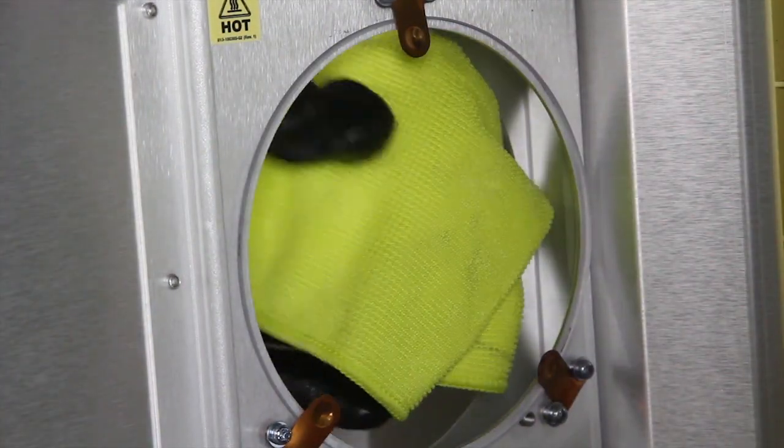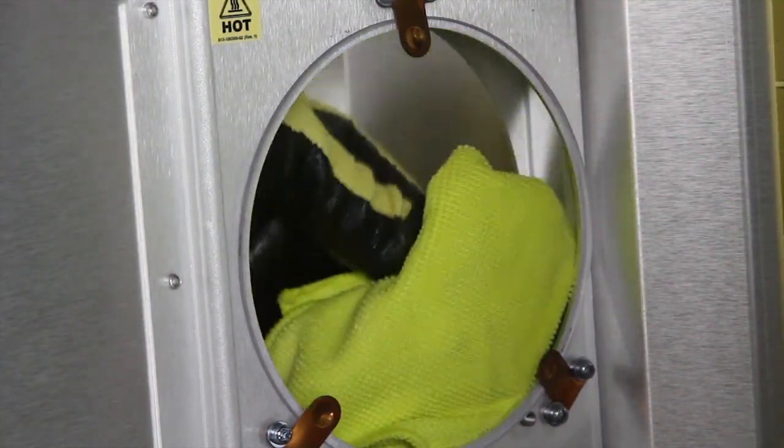While the lamp is out, clean the reflector with a lint-free cloth. Next, use the cloth to wipe off the UV glass.